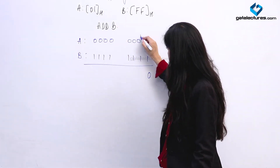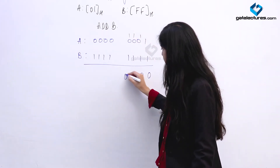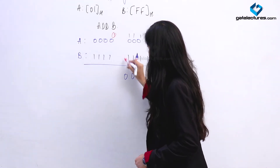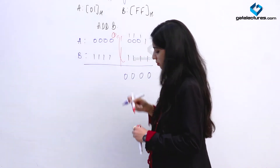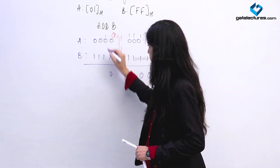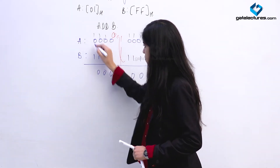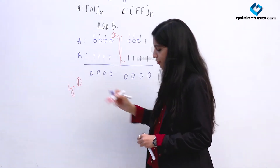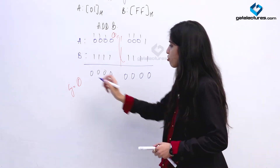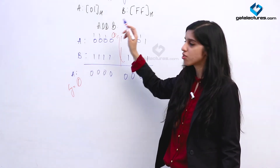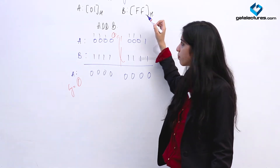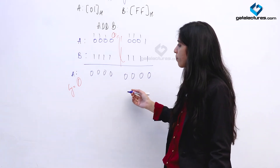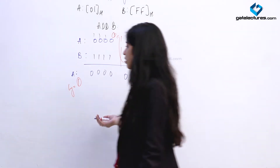A is holding 01H (converted to binary: 0000 0001), and contents of B are FFH (1111 1111). Adding them: 1+1 is 0 with carry, and we get an auxiliary carry. The final result in the accumulator is 00H. Register B is untouched; only the accumulator is overwritten with the result, which is 0.